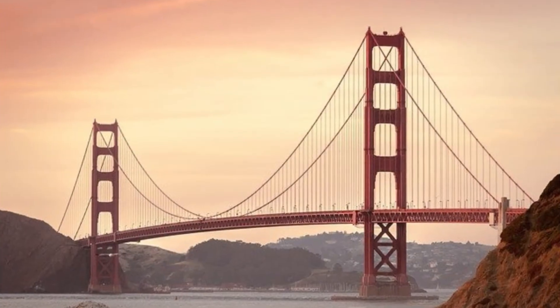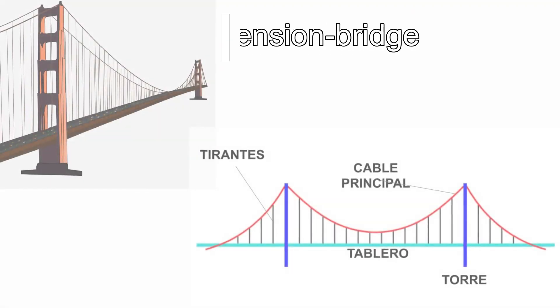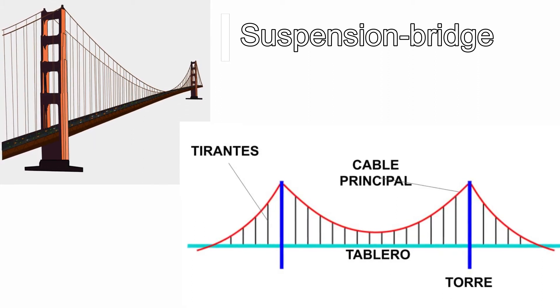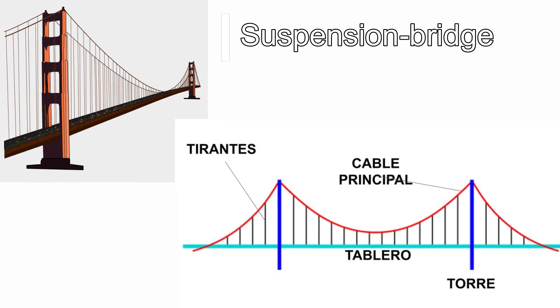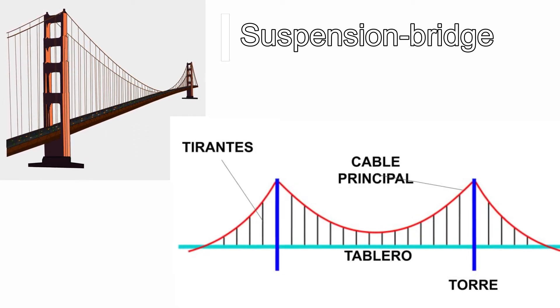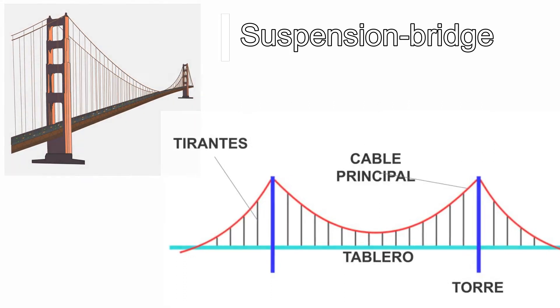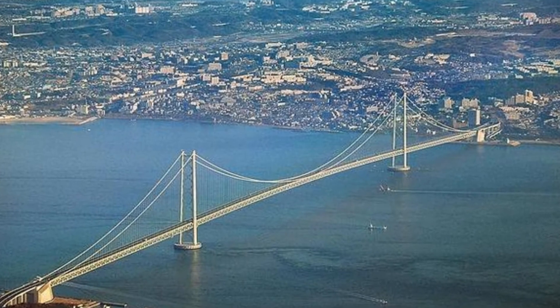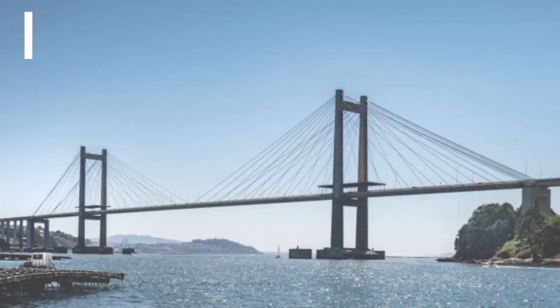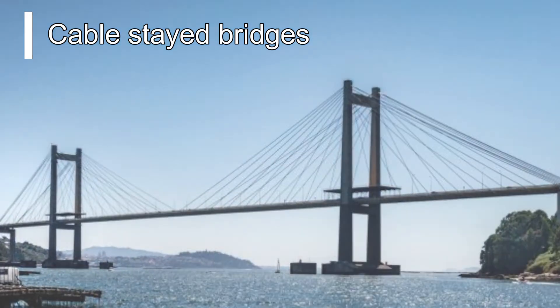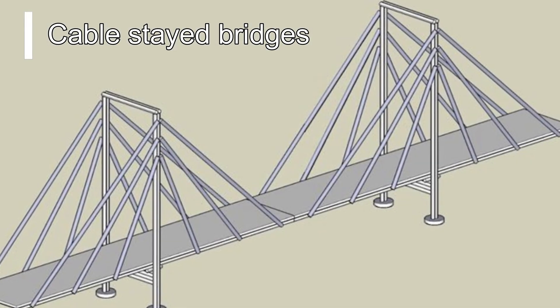In tensioned structures, the main resistance elements are the cables or tensioners. A suspension bridge is formed by two main cables hanging from towers on each side of the bridged area. The deck is hung from vertical straps attached to these main cables. The main cable allows the loads to be transferred from the suspension cables to the concrete towers. They usually allow covering greater distances than cable-stayed structures. Cable-stayed bridges look a lot like suspension bridges, but their braces directly transmit the loads to the support towers — that is, in cable-stayed bridges, there is no main cable.